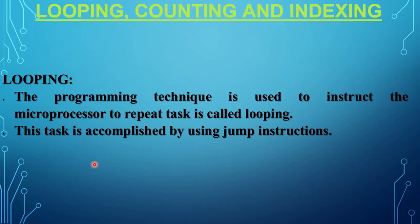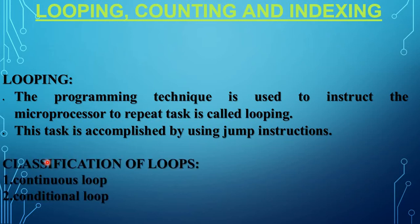Today, I am going to discuss looping, counting and indexing. The programming technique used to instruct the microprocessor to repeat a task is called looping. This task is accomplished by using jump instructions. Looping can be classified into two types: the first one is continuous loop, and the second one is conditional loop.